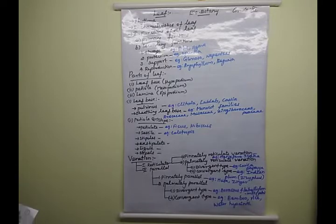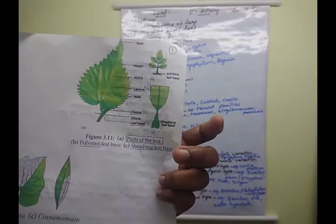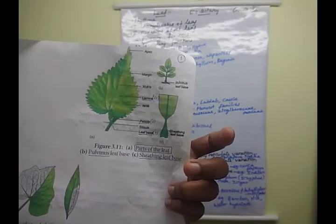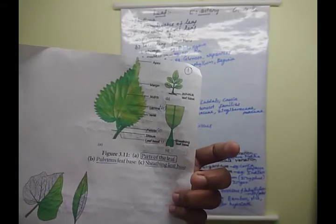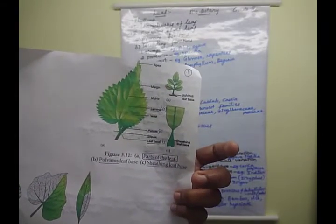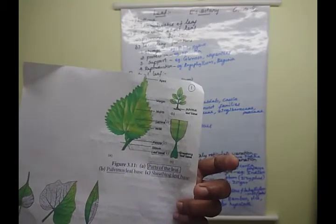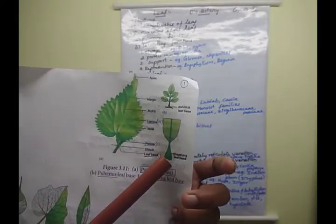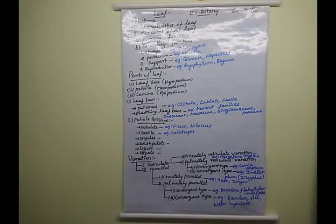The sheathing leaf base is mainly present in monocotyledon plants. It has a sheath or clasp-like structure attaching to the internodal part. When the leaf falls, a scar remains at the internode. This type is called sheathing leaf base. It is found in monocotyledon families like Arecaceae, Musaceae, Zingiberaceae, and Poaceae.